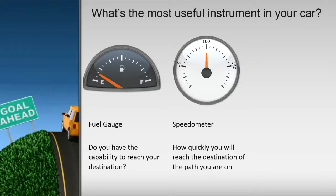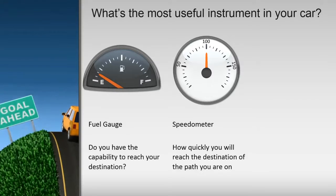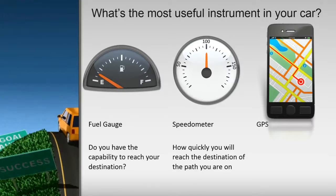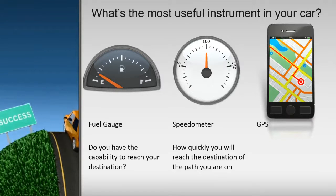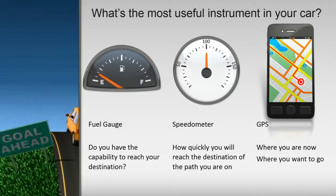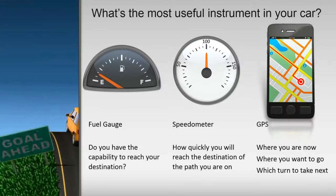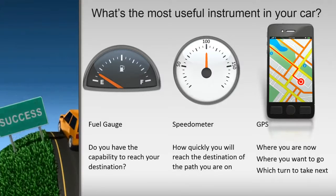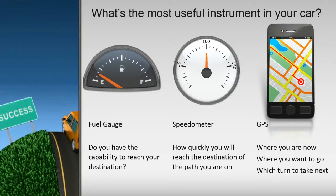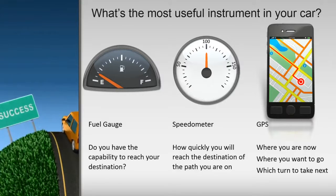But the most valuable instrument in your car is your GPS. The GPS tells you where you are now and where you need to turn next to reach your desired destination, irrespective of the route you have chosen to take. If you've made a wrong turn, your GPS informs you to turn around at the first available opportunity and take another route. If you insist on going down the wrong route, your GPS will recalculate a new optimal route to reach your desired destination.